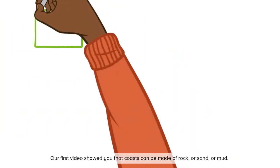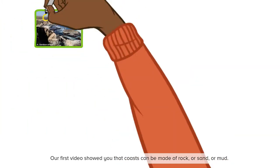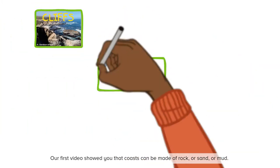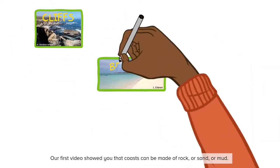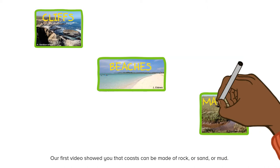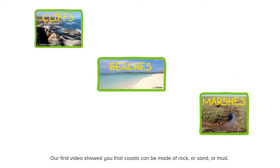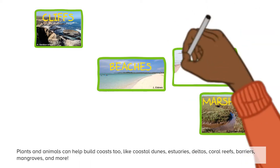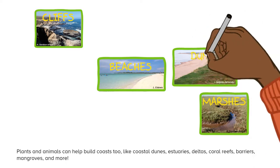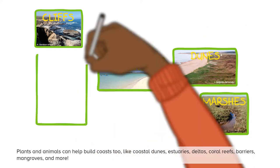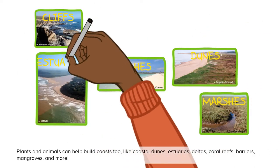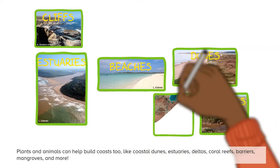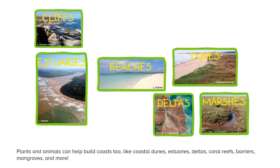Our first video showed you that coasts can be made of rock or sand or mud. Plants and animals can help build coasts too, like coastal dunes, estuaries, and deltas.